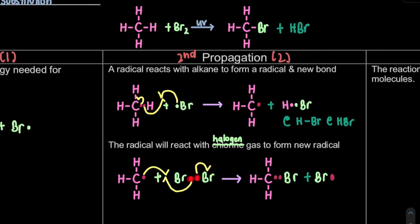Showing the two dots is just to make it easier to show the movement of the one electron. That is for the propagation.